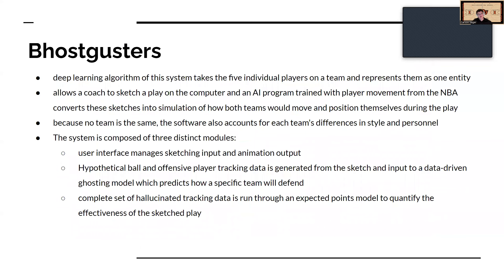Ghost, or what's called here Bost Guzzers, is pretty cool. It's a deep learning algorithm that takes five individual players on a team and represents them as one entity shifting around as one block, rather than tracking each individual player. It allows a coach to sketch a play on the computer, and an AI program trained with player movement from the NBA converts these sketches into a simulation of how both teams would move and position themselves during the play. Because no team is the same, the software also accounts for each team's differences in style and personnel.